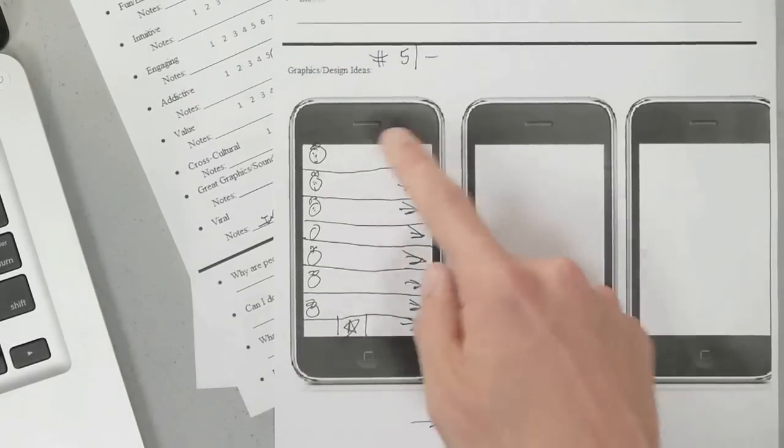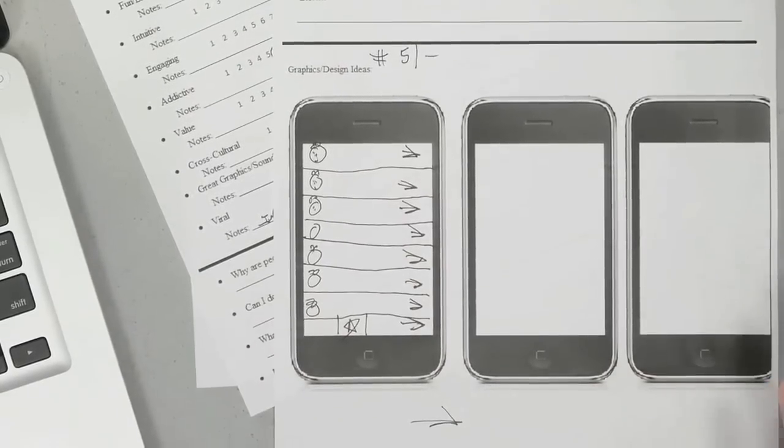So that's the first screen. When they open it up, boom, first screen. So the next screen, whenever they click on one of these banners, what goes on then?